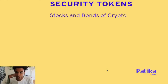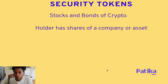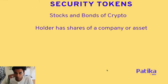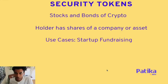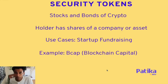Next are security tokens — the stocks and bonds of crypto. A holder can have security tokens that represent a share of a company or an asset. You can even fractionalize — taking a very expensive item, like a piece of art in the real world, and allowing people to own a share of that art through security tokens. Another use case is startup fundraising, where people can raise funds on-chain by offering security tokens that essentially operate as stocks in the company. A real-world example is BCAP, or Blockchain Capital, where they make investments in startups and you can own the BCAP token, which represents holding shares directly in their investments.